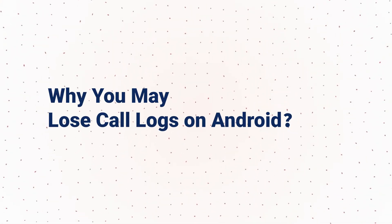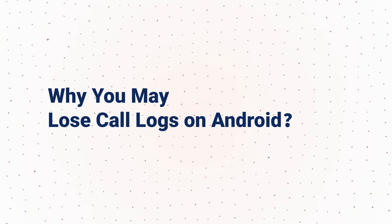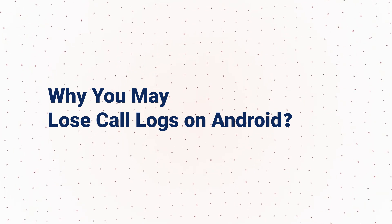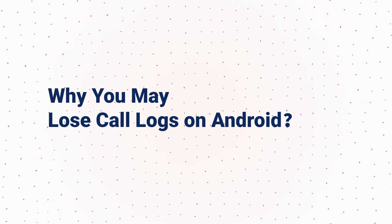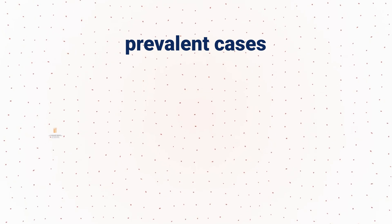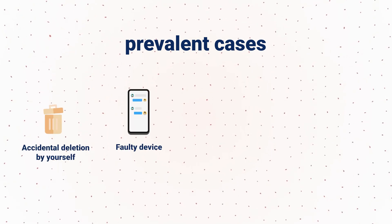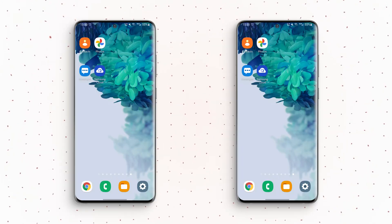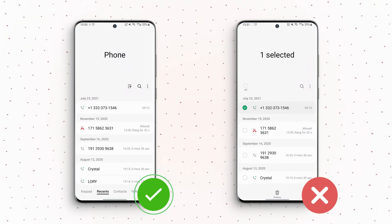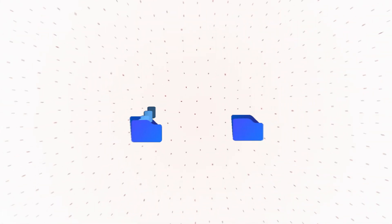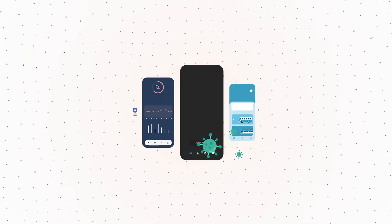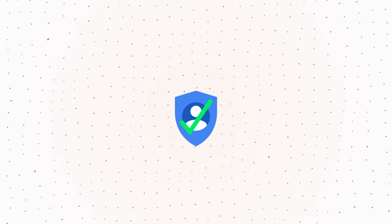Although we can always find a way to retrieve deleted call histories, we better nip it in the bud. Knowing why call logs can be misplaced can help decrease the chances of a mishap like this happening. Some of the most prevalent causes are accidental deletion by yourself, faulty device, viruses, and corrupt storage. Here are some tips: make sure to manually and selectively delete call log history instead of selecting the 'delete all' button, keep copies of essential data, stop downloading from untrustworthy sources, and install reliable antivirus software.